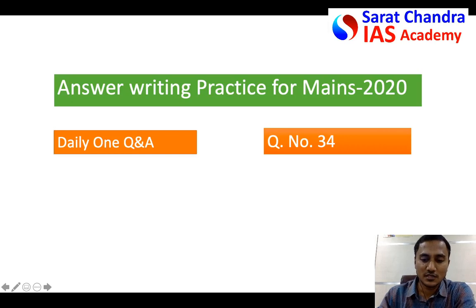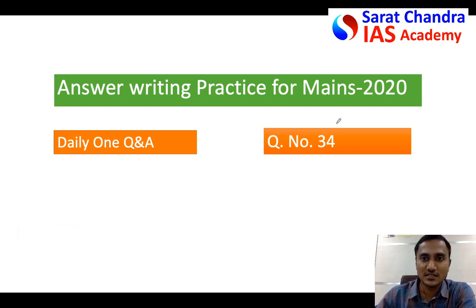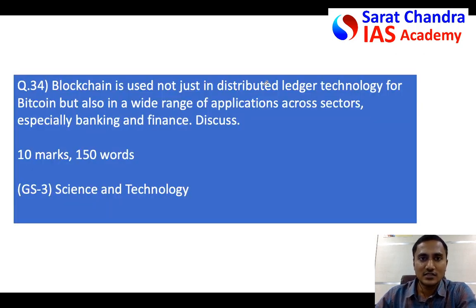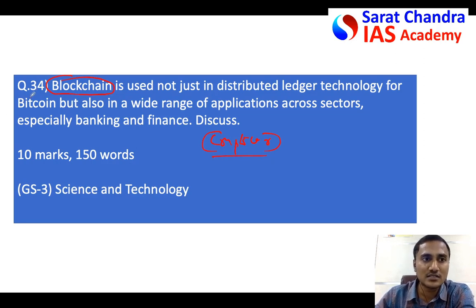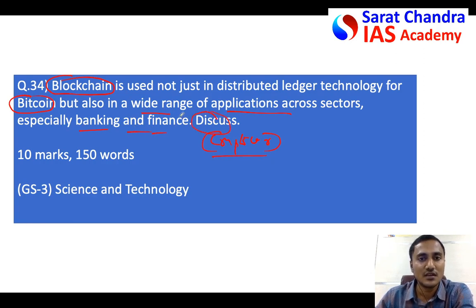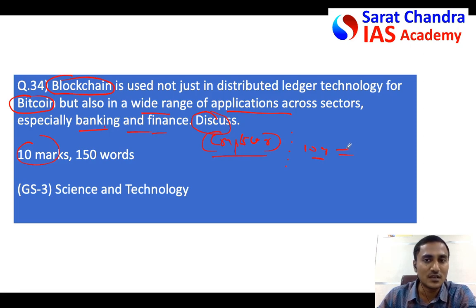Today we will discuss the answer for question number 34, which falls under General Studies Paper 3. The question is from science and technology — specifically the cryptocurrencies topic, which is coming frequently in the news. Blockchain technology is the focus: the question asks that blockchain technology is used not just in cryptocurrencies like Bitcoin but has a wide range of applications, particularly in the banking and finance sector. Discuss.